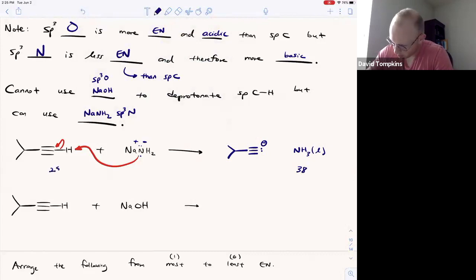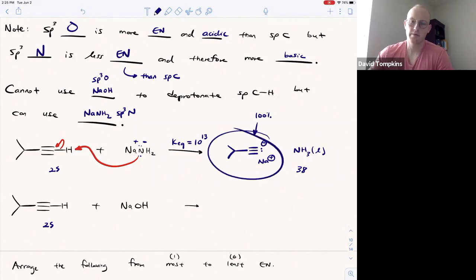And ammonia has a pKa of roughly 38. The alkyne has a pKa of roughly 25. And therefore, the equilibrium constant for generating this acetylide ion is 10 to the difference in pKa's or 10 to the positive 13, which means that reaction is irreversible and you get 100% of this acetylide ion. So that is then going to be useful for forming carbon-carbon bonds in a later step.